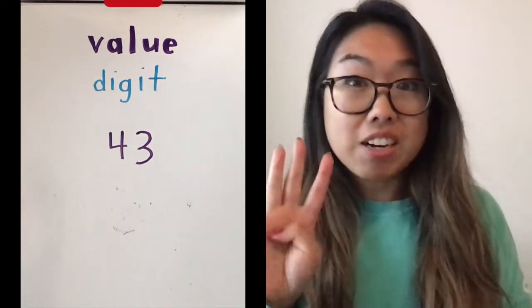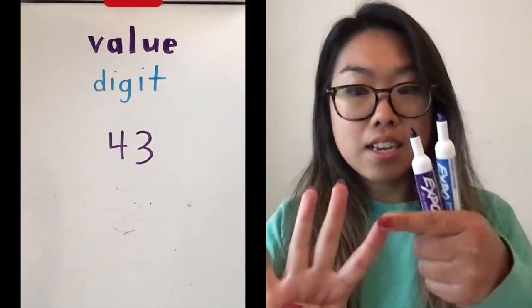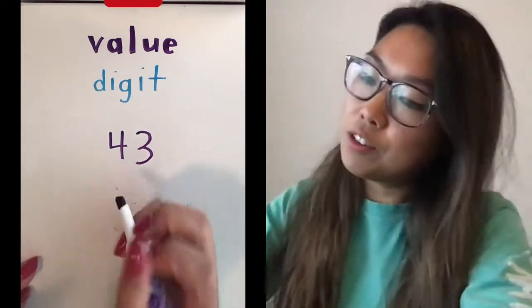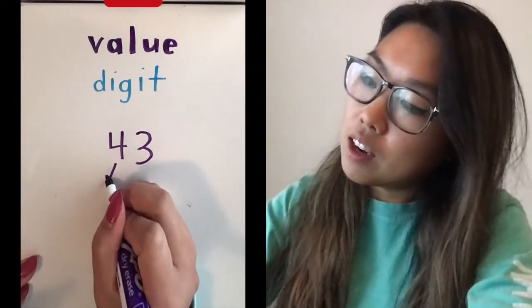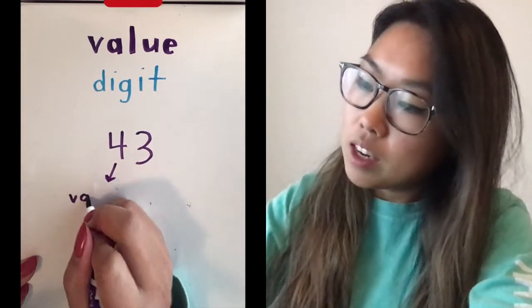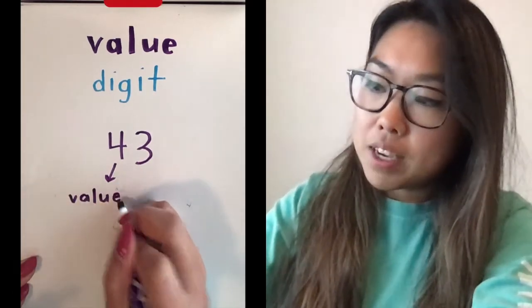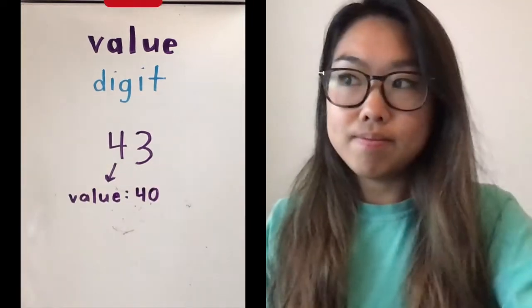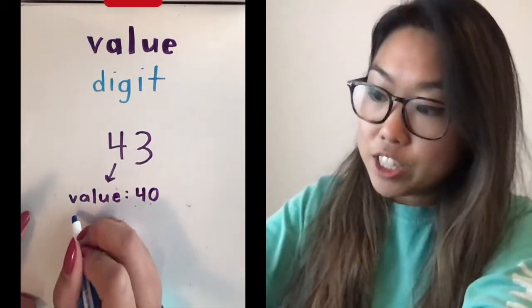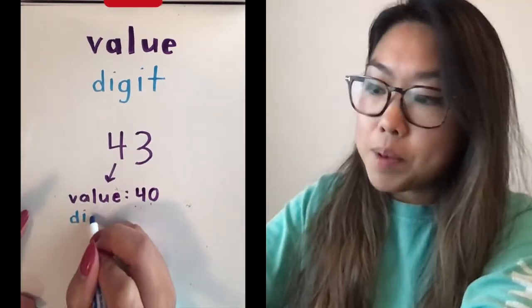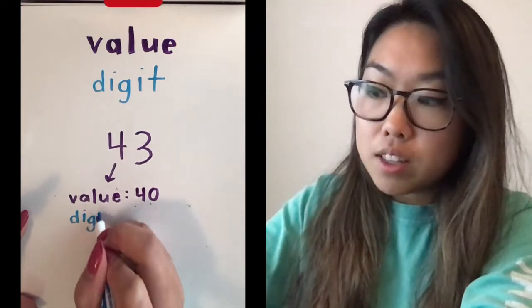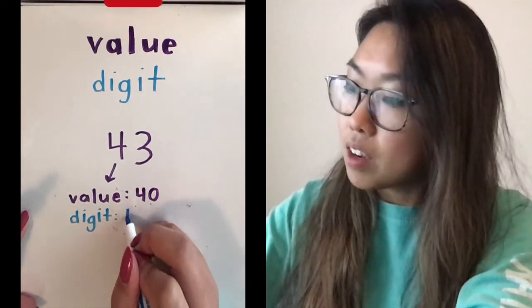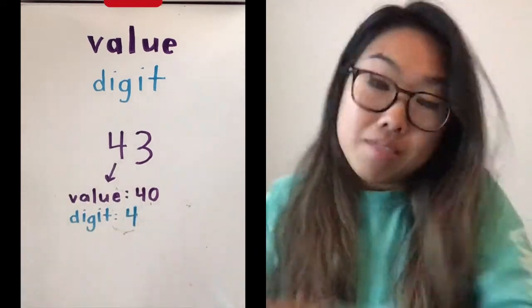To figure out its value, I can count by tens: 10, 20, 30, 40. So the value of this number is 40, because that's what it's worth. But when I think about the digit, I'm not thinking about what it's worth — I'm thinking, what's the number? And the number is four.